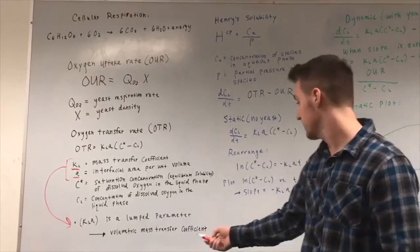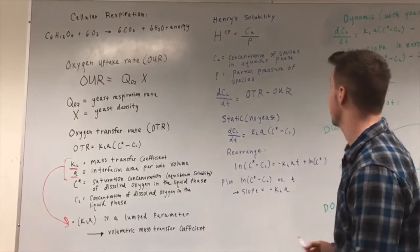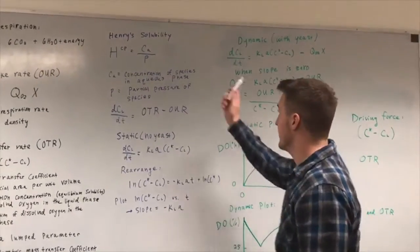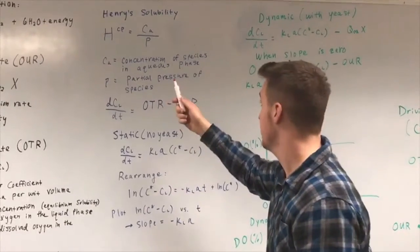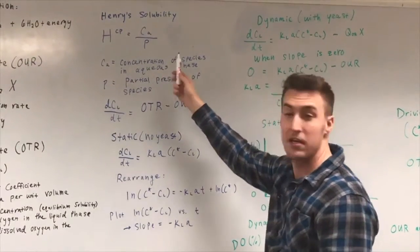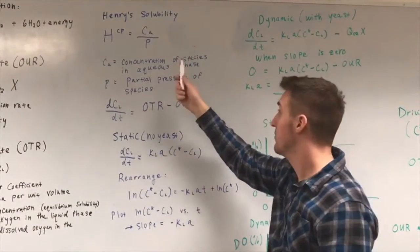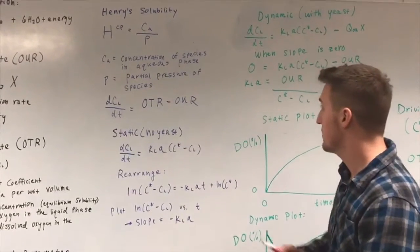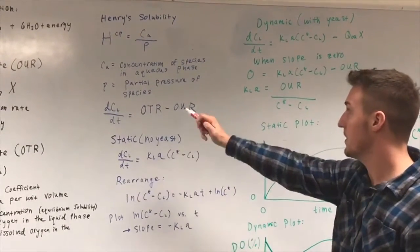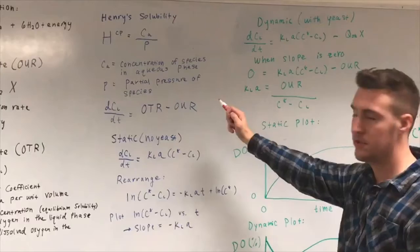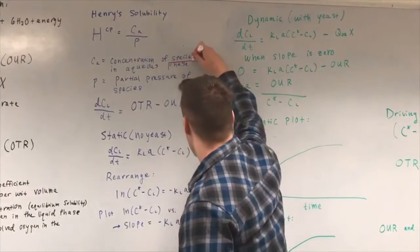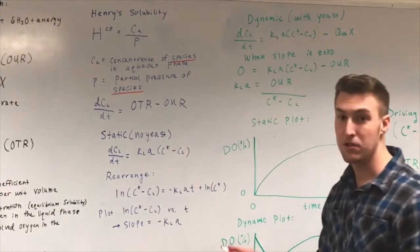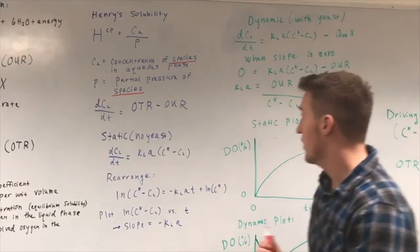Because KL and a are both difficult to measure on their own, they are combined into a lumped parameter KLa, the volumetric mass transfer coefficient. Henry's solubility will be used here; it equals CA over P, where CA is the concentration of the species in the aqueous phase and P is the partial pressure.